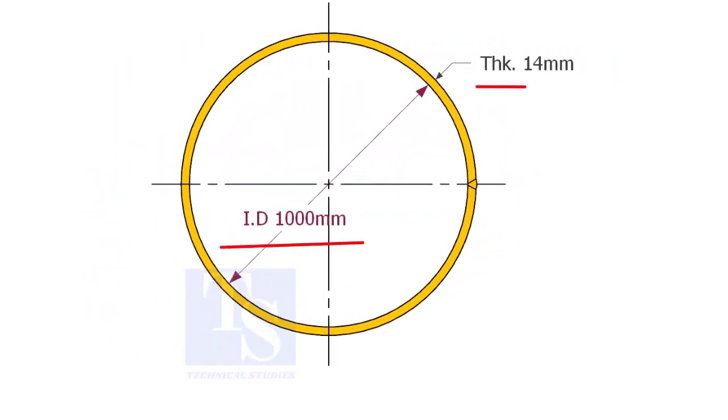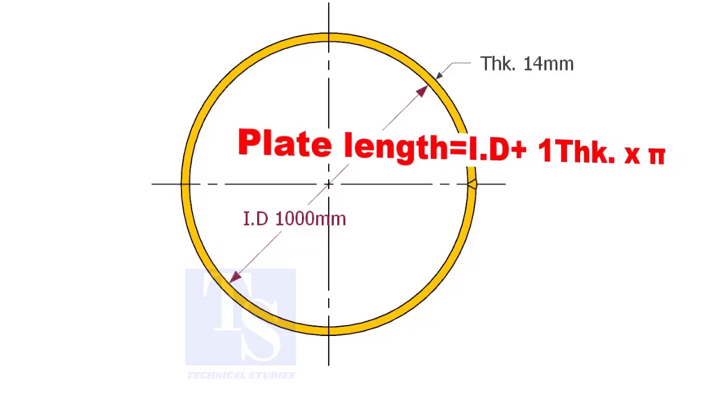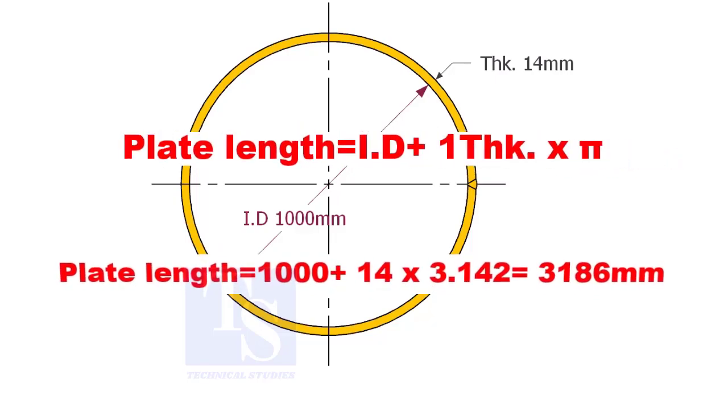Assume that the ID of the pipe is 1000 mm and the thickness is 14 mm, then add one thickness to the ID, and then multiply with pi.